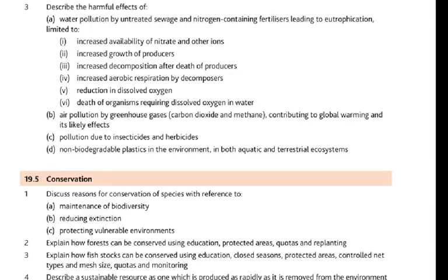Checking against the syllabus: water pollution by untreated sewage and nitrogen fertilizers increases availability of nitrate ions — fertilizer washed into lakes and rivers, and untreated sewage also contains nitrates and phosphates from detergents. This causes increased growth of producers (algae), increased decomposition after death of producers, increased aerobic respiration by decomposers, reduction in dissolved oxygen, and death of organisms requiring dissolved oxygen — like fish. Always go back to the syllabus after covering a topic to check all points are understood.